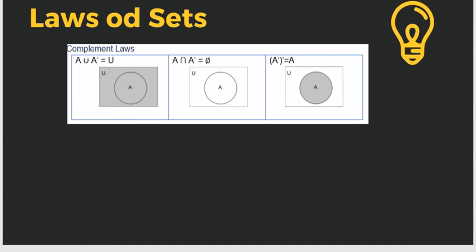Next, the complement law. If we take A union A prime, it is equivalent to U (the universal set). But A intersect A prime equals null. And the complement of A prime, or (A')' equals A itself. So: A union A' gives everything; A intersect A' gives nothing; and the complement of A' gives back A.